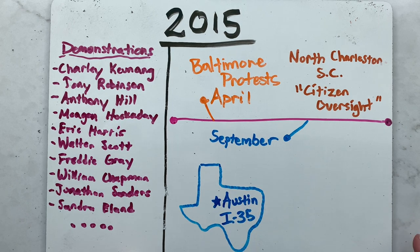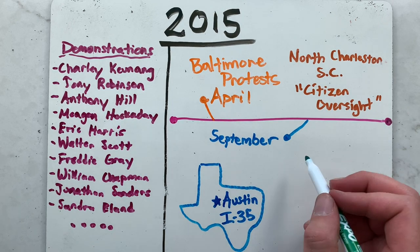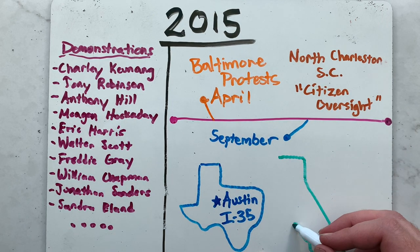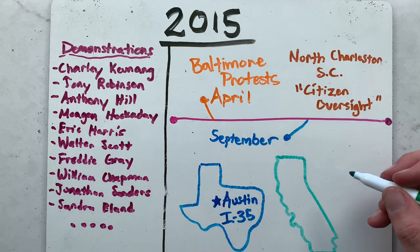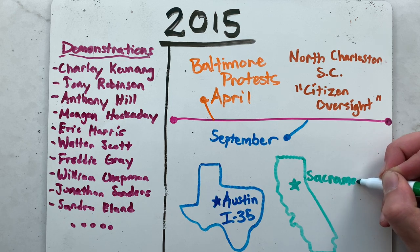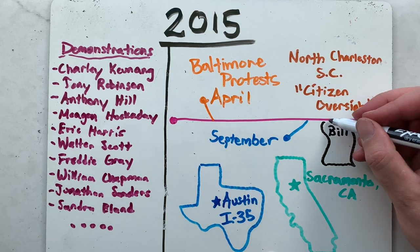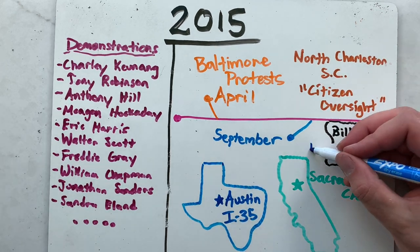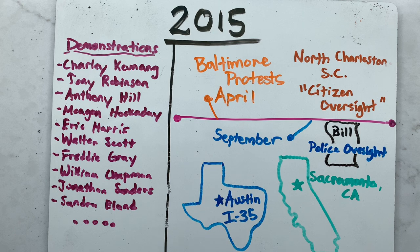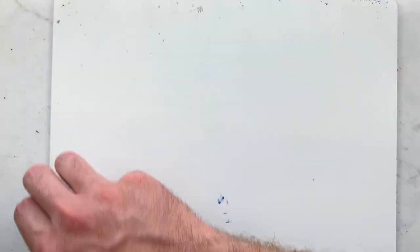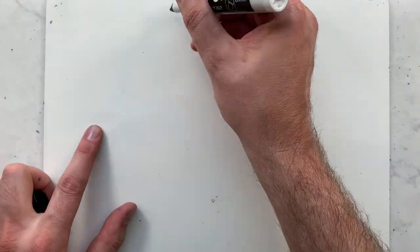In September, over 500 BLM protesters in Austin, Texas rallied against police brutality and several briefly carried protest banners onto Interstate 35. Meanwhile, in Sacramento, California, about 800 BLM protesters rallied to support a California Senate bill that would increase police oversight.